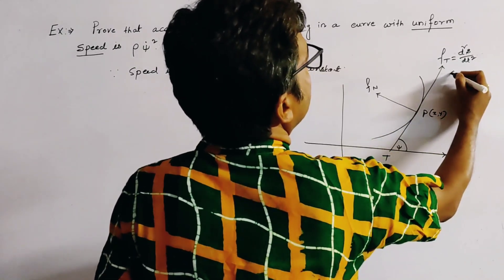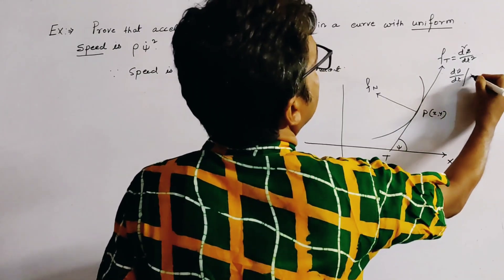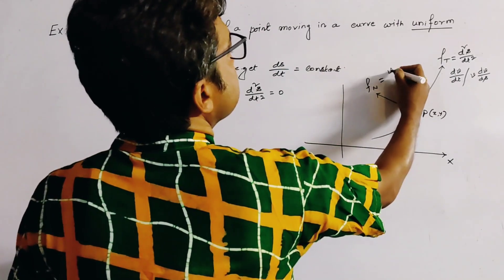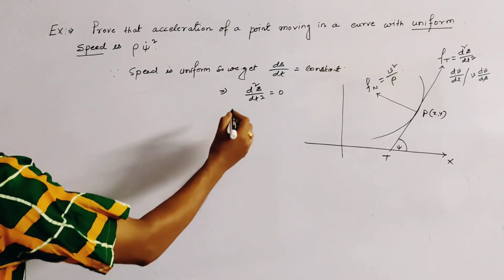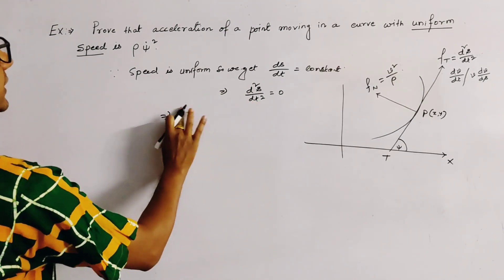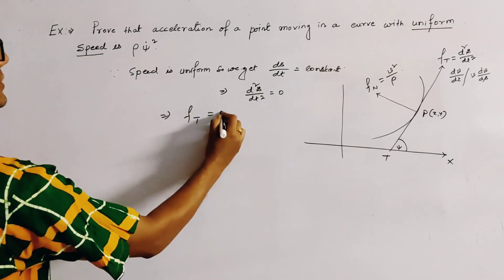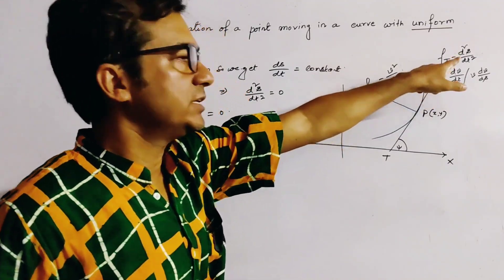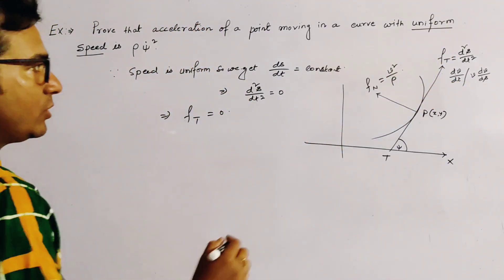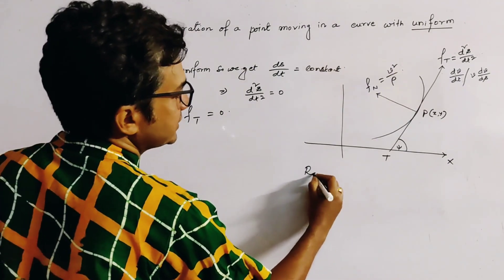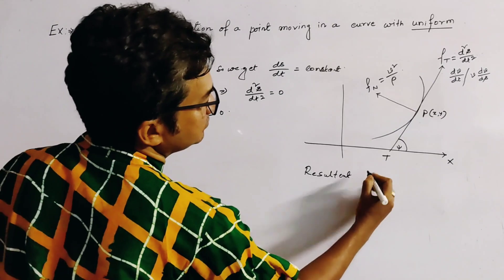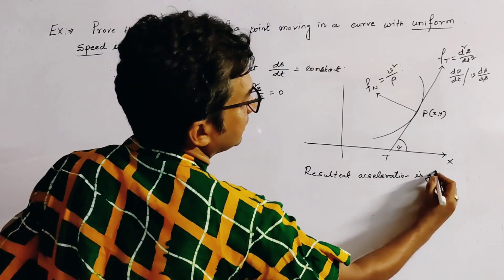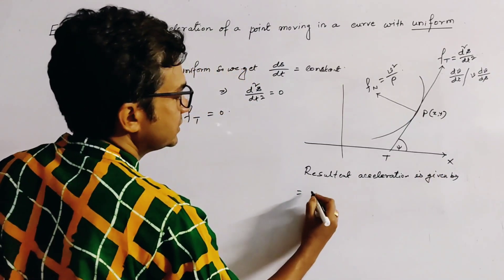The tangential acceleration is d²s/dt², or dv/dt, or v·dv/ds. The normal acceleration is v²/ρ. From the uniform speed condition, the tangential acceleration fₜ = d²s/dt² = 0.